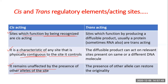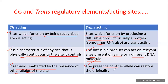Trans-acting sites are sites which function by producing a diffusible product, usually a protein, though sometimes RNA. The diffusible product can act on relevant sites present on the same or different DNA molecule — genes present close to the trans-acting site, at a distant place, or on an altogether different molecule. Importantly, the presence of another allele can restore the original condition.